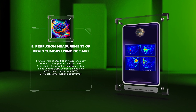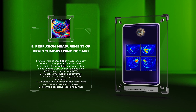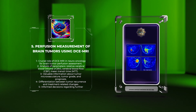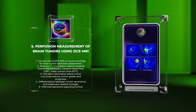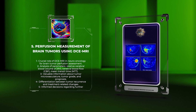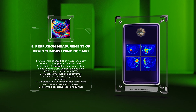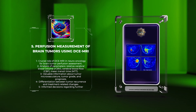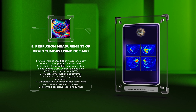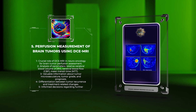In the field of neuro-oncology, DCEMRI plays a crucial role in the assessment of brain tumor perfusion. By analyzing parameters such as relative cerebral blood volume (rCBV), cerebral blood flow (CBF), and mean transit time (MTT), we can uncover valuable information about tumor microvasculature, tumor grade, and prognosis. Moreover, DCEMRI can aid in differentiating tumor recurrence from treatment-related changes, assisting clinicians in making informed decisions regarding further interventions or surveillance.